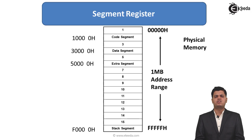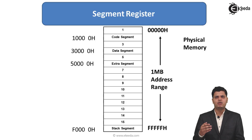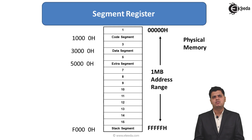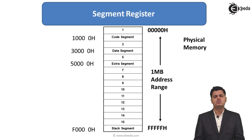The width of all the registers is 16 bits, and they are used for storing the starting address of the segment. In this diagram we have shown the 1 megabyte memory range as physical memory, with some defined segments. The first segment is defined as code segment, the fourth as data segment, the sixth as extra segment, and the sixteenth as stack segment. Their starting physical addresses are 10000H for code segment, 30000H for data segment, 50000H for extra segment, and F0000H for stack segment.